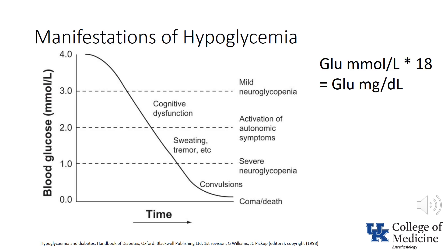Other than the central nervous system manifestations, hypoglycemia is probably most easily understood as a cause of an adrenergic syndrome. This slide correlates the manifestations of hypoglycemia with specific blood glucose levels. It may be worthwhile pausing the presentation here to review the slide in more detail. Note that the values for blood glucose are in millimoles per liter. To convert that to milligrams per deciliter, multiply by 18.